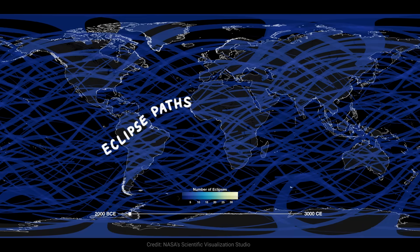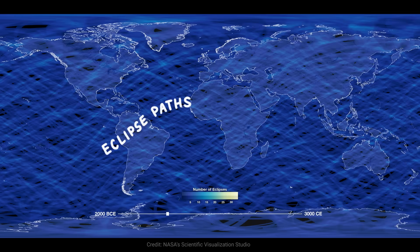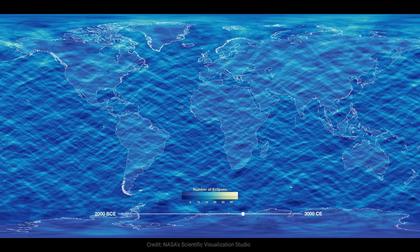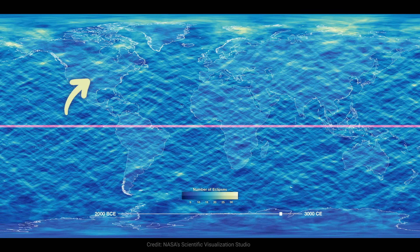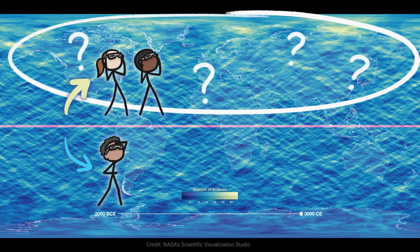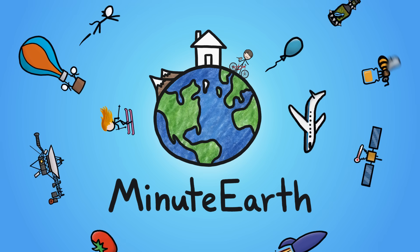Every location on Earth has been in the shadow of at least one total eclipse. But some places experience way more of these events than others, like someone who lives north of the equator is about twice as likely to see a total eclipse as someone south of the equator. Why on Earth would that be? Hi, I'm Cameron and this is MinuteEarth.